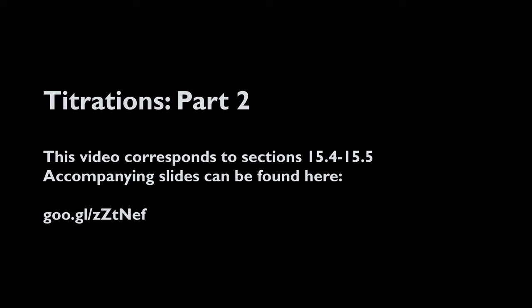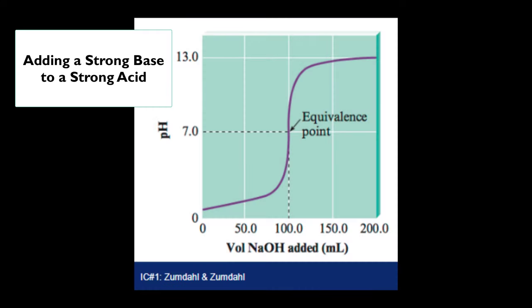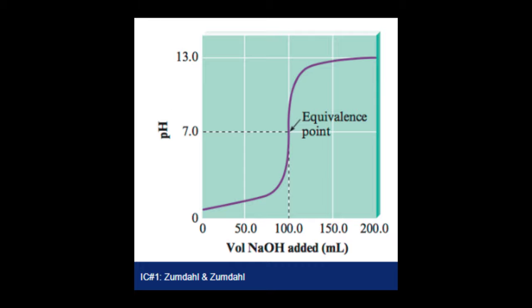I want to take a moment examining these pH curves a little bit more closely. This is the curve we saw of a strong base being added to a strong acid, and I know that again because I'm starting at a low pH, I'm ending at a high pH, and my equivalence point is neutral. In this section of the curve, I have an excess of acid, and that's why my pH is staying relatively low.